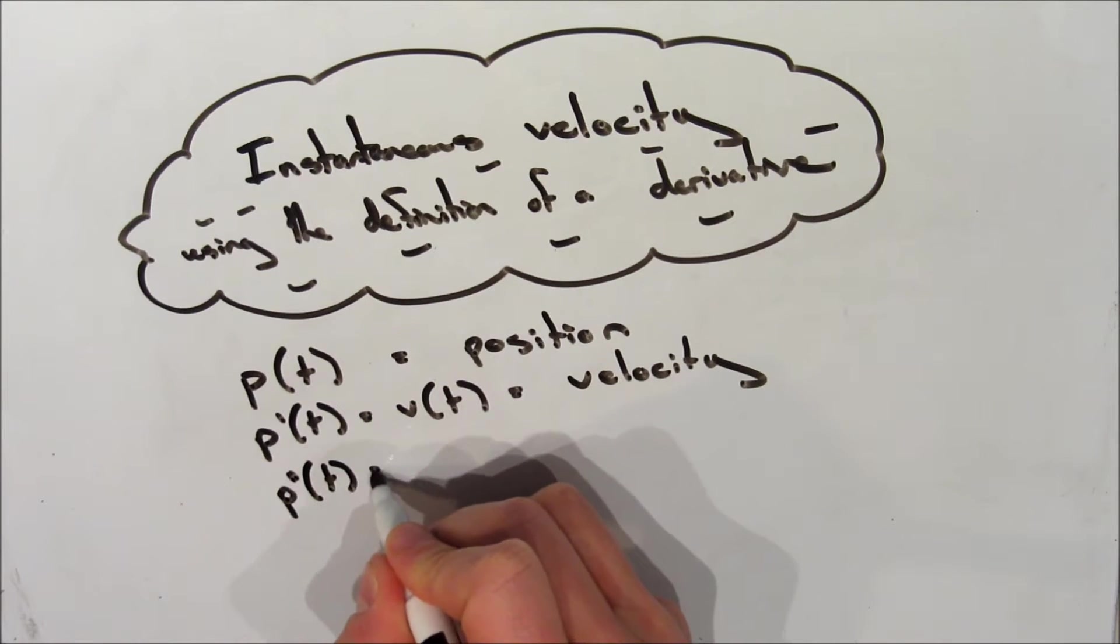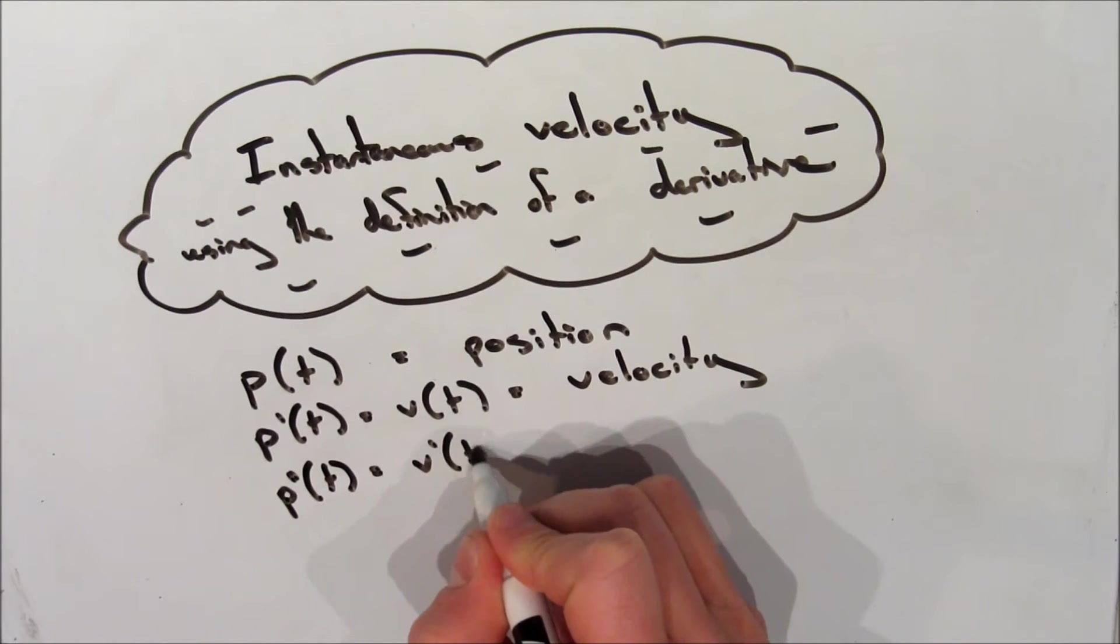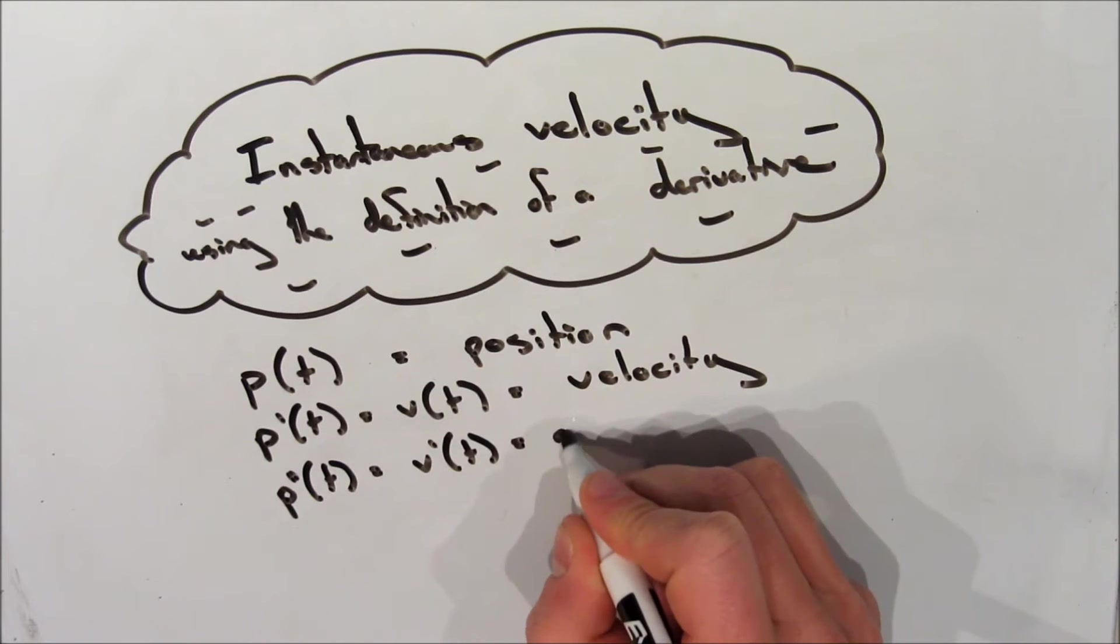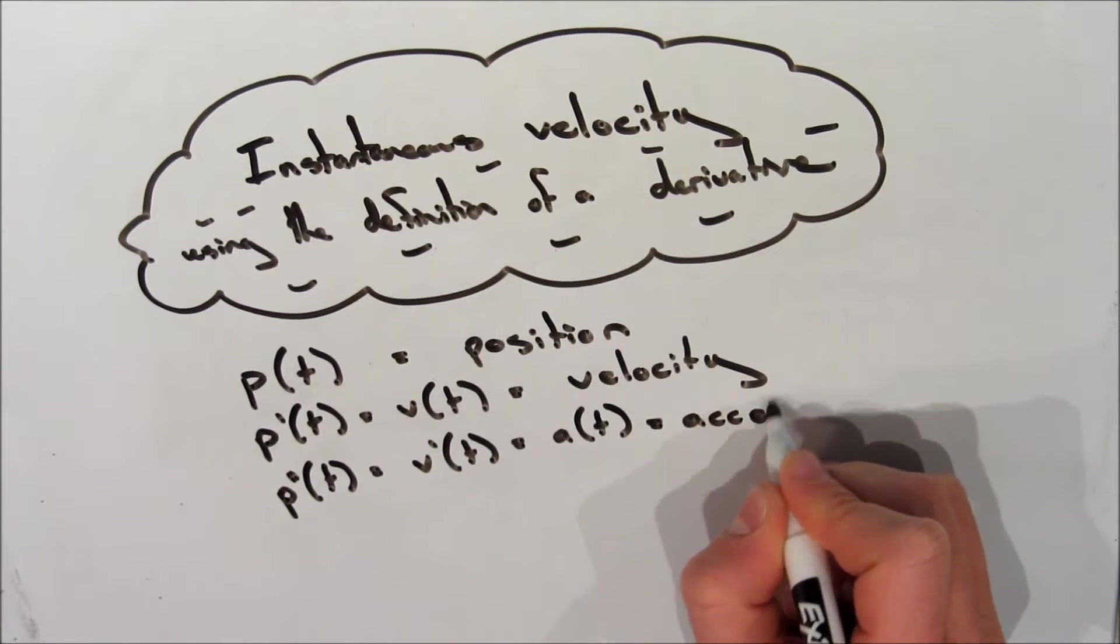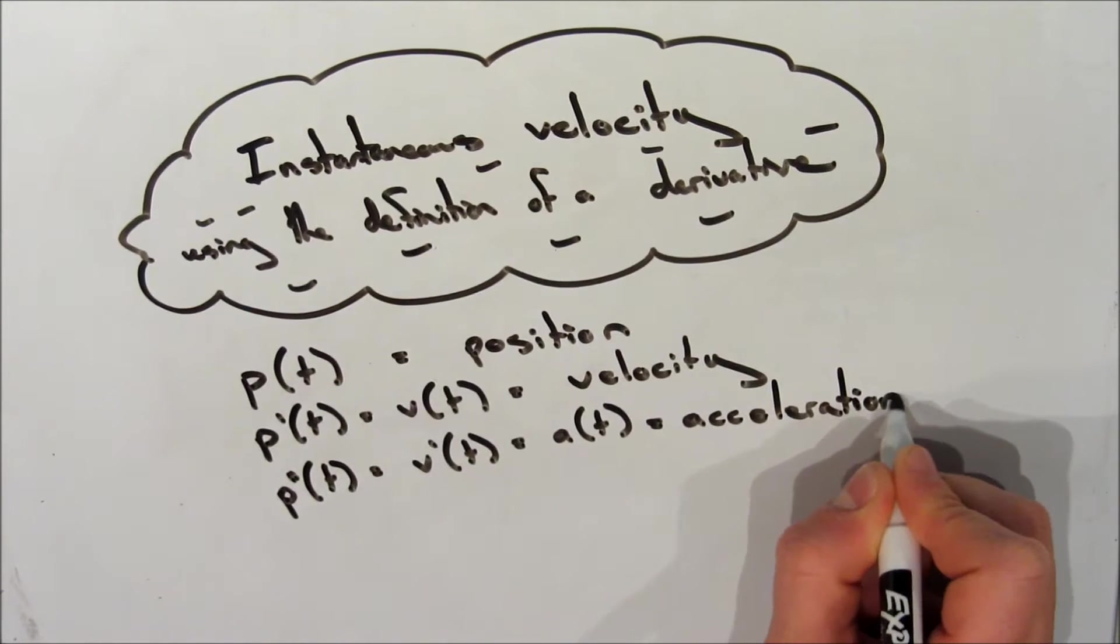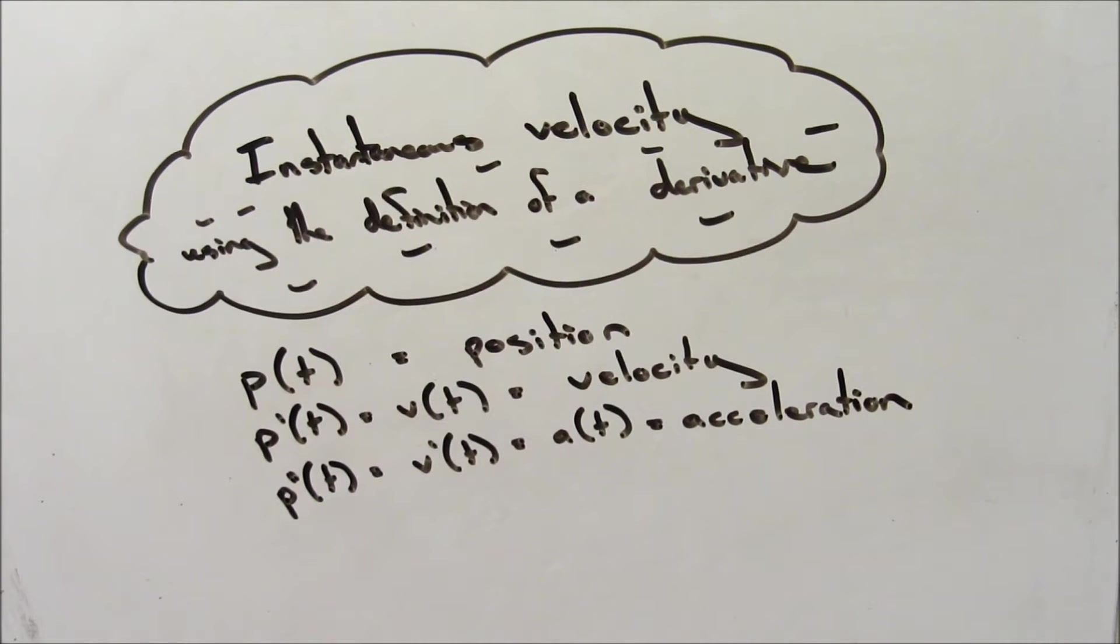Now if we take the derivative of the velocity function, which is the derivative of the derivative of the position function, this will give us a of t, which can represent the acceleration of the object. This is good to know for later. Right now we're just going to focus on velocity, but it's a good thing to know.